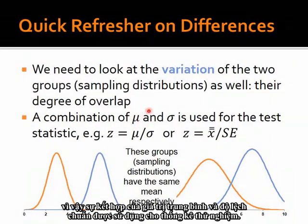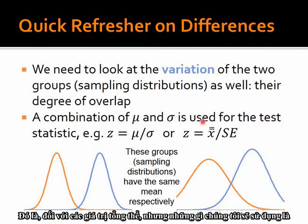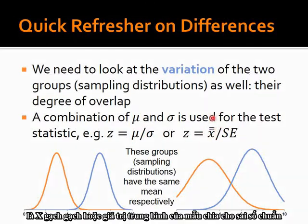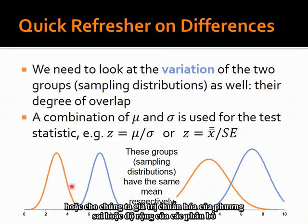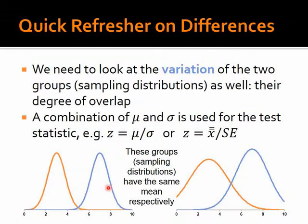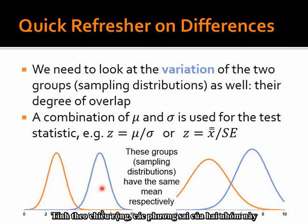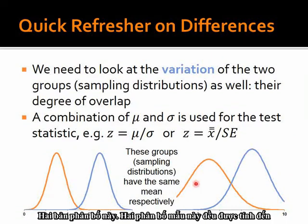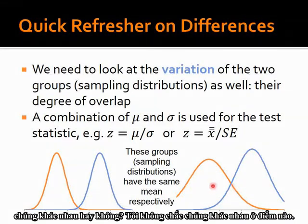A combination of the mean and the standard deviation is used for the test statistic. We calculate Z equals mean over standard deviation for population values. What we use is the sample mean divided by the standard error, giving us a normalized value of the variation or width of the distributions. Taking the variations of the two sampling distributions into account, are we confident enough to say yes, they are different, or no, I'm not sure?